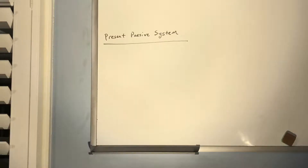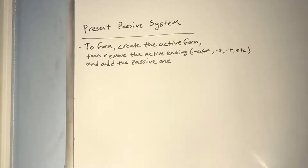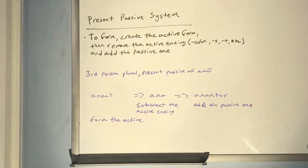To form verbs in the present passive system, create the active form, remove that active ending (the -O or -M, -S, -T, etc.), and add one of the six passive endings depending on number and person. As an example, the third person plural present passive of AMO: the active form is AMANT, subtract -NT to get AMA-, then add the passive ending -NTUR to get AMANTUR. That is the third person plural present passive of AMO.